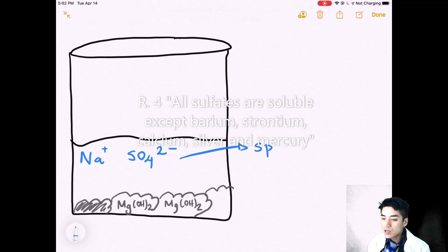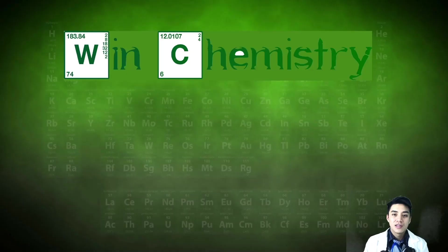Now for sodium sulfate, all sulfates are soluble except barium, strontium, calcium, silver, and mercury. So these have to be the spectator ions. Thanks for tuning in and we'll talk to you guys some more on the next edition of win chemistry.